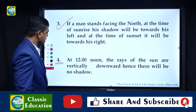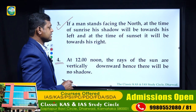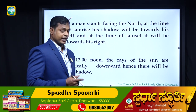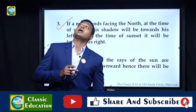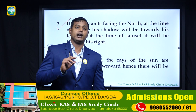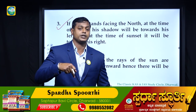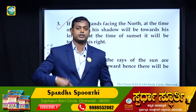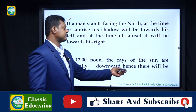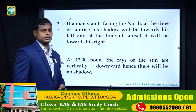Point four: at 12 noon, the rays of the sun are vertically downward, and hence there will be no shadow. At 12 noon, the sun is directly overhead, so the rays are vertical - therefore no shadow is cast. We have to remember these four shadow-related points for examination purposes.